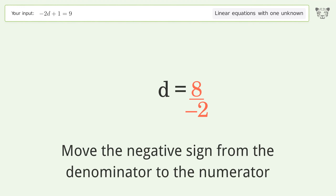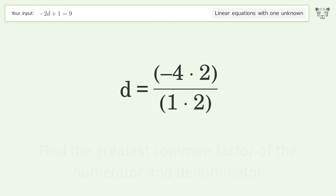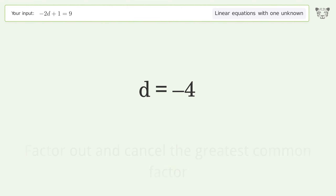Move the negative sign from the denominator to the numerator. Find the greatest common factor of the numerator and denominator, then factor out and cancel the greatest common factor. And so the final result is d equals negative 4.